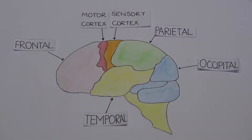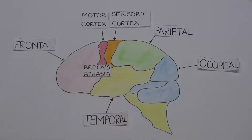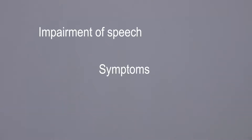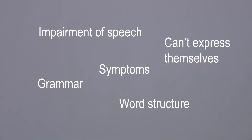Broca's aphasia, otherwise known as expressive aphasia, is a condition which results from damage to the left frontal lobe. Broca's aphasia causes impairment to speech, particularly in grammar and word structure. The person's comprehension of the language is good, but they can't find the words to express themselves.